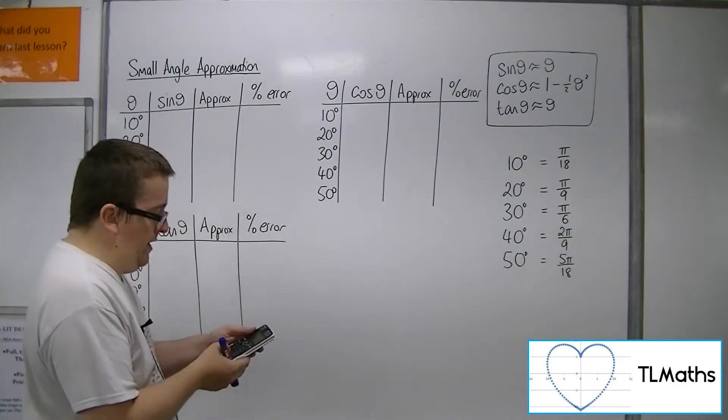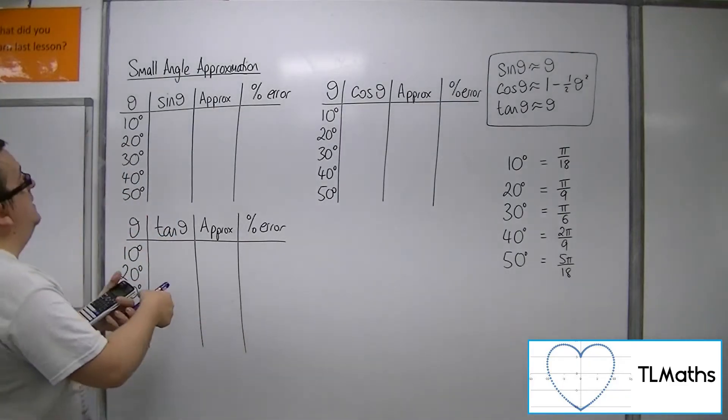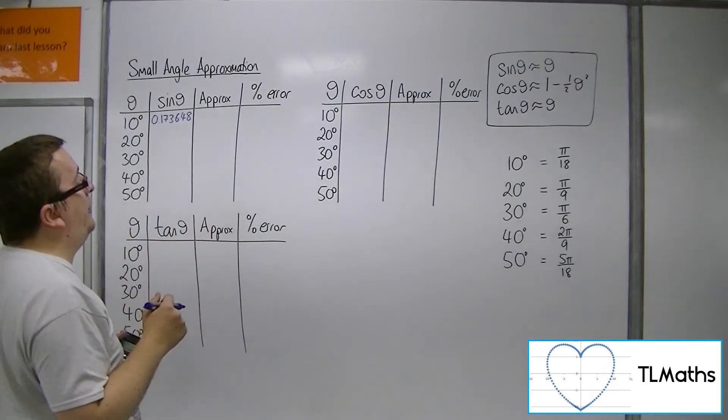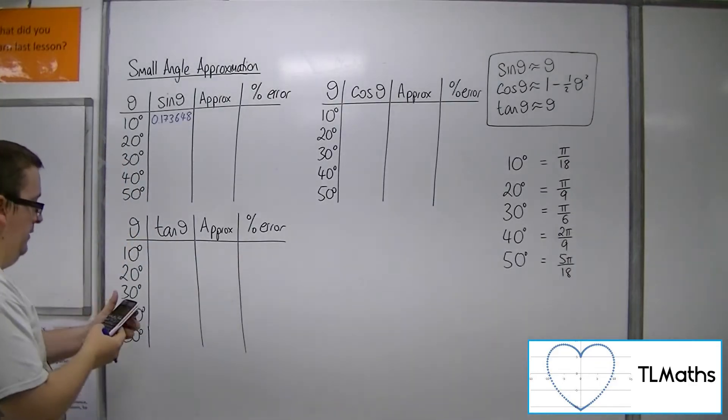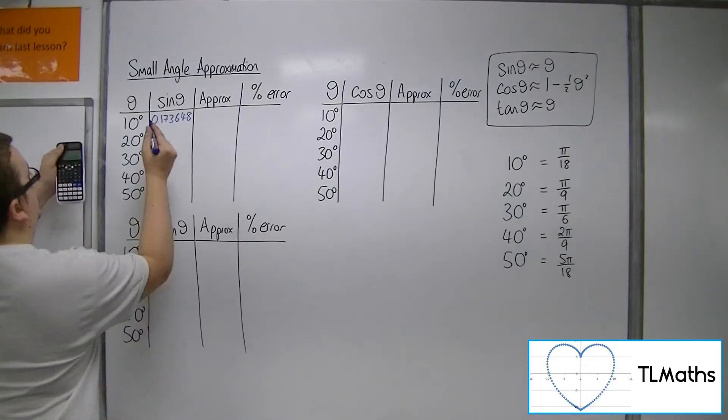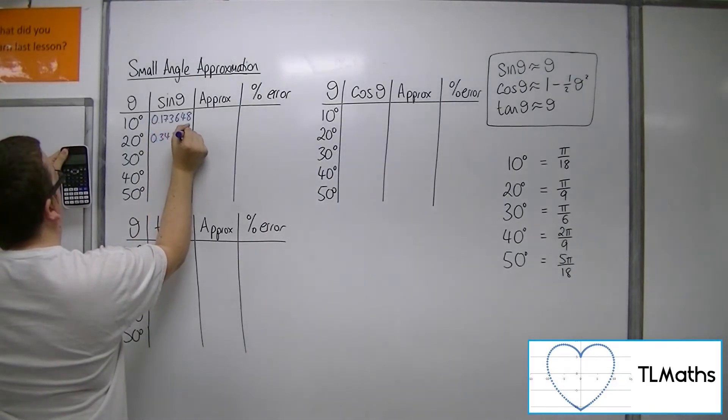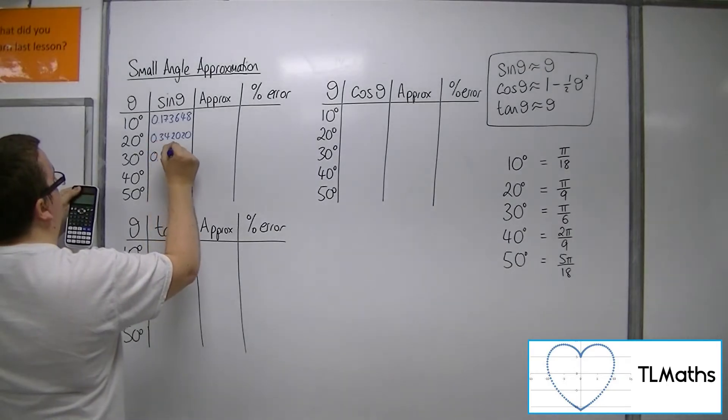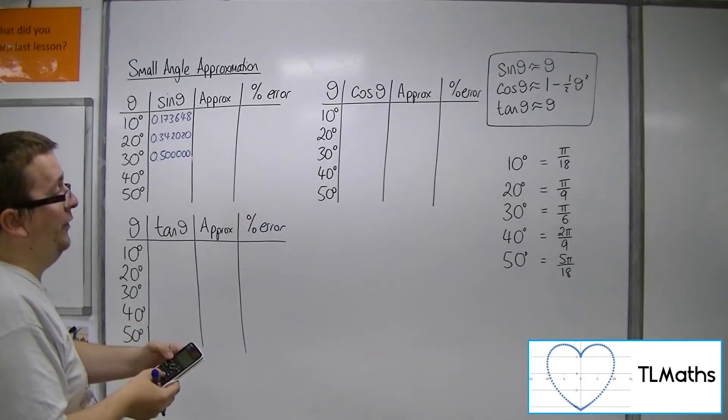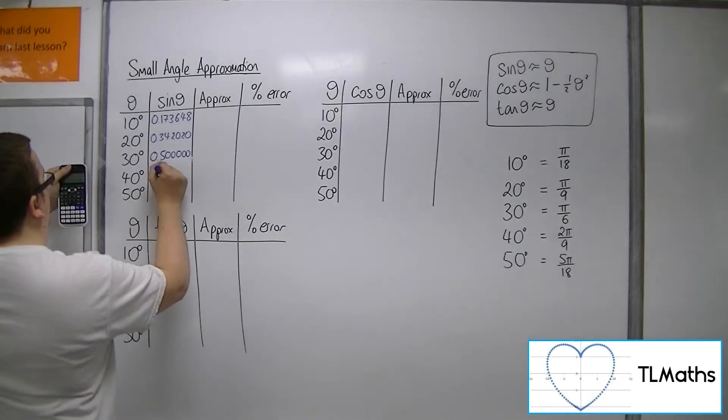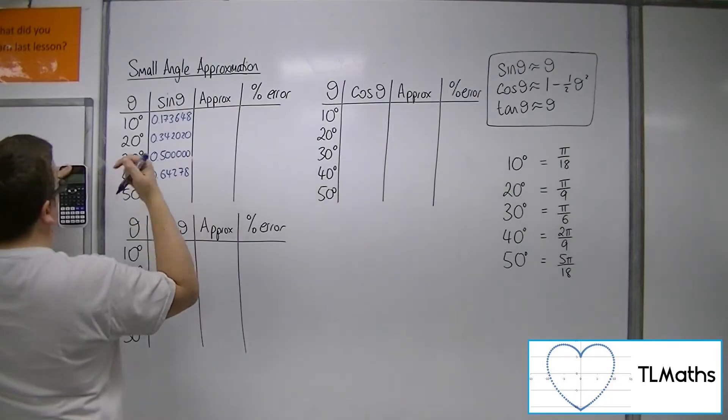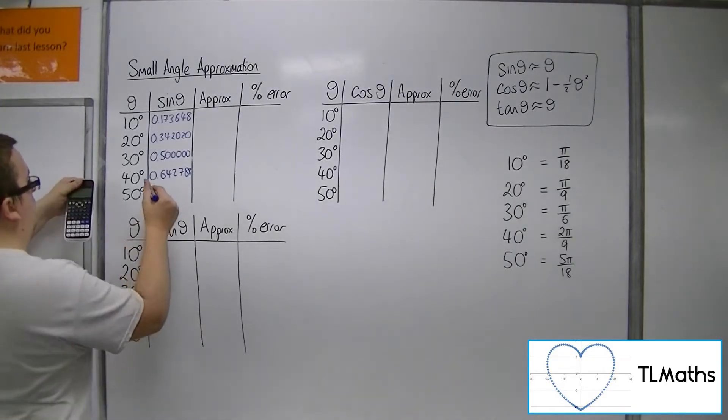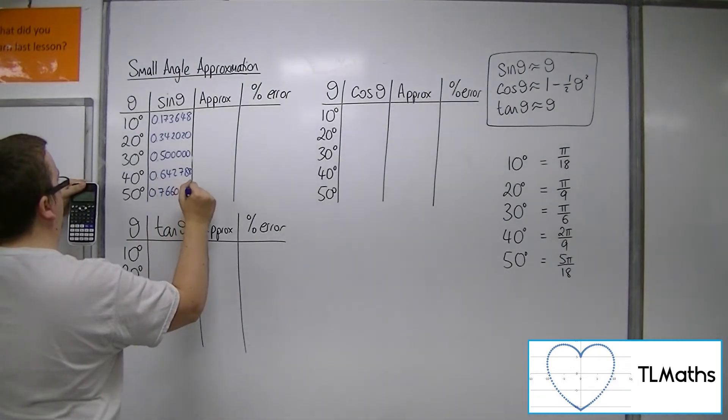So, sine of 10 degrees, I'm doing sine of pi over 18. My calculator gives it to 0.173648. I'm going to go to six decimal places. Then I've got sine of pi over 9, which is 0.342020. Then sine of pi over 6, which is a half, so 0.500000. Then sine of 2 pi over 9, which is 0.642788. And then sine of 5 pi over 18 is 0.766044.